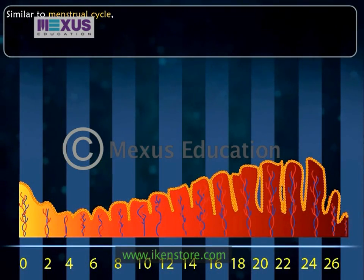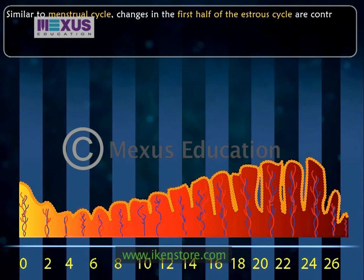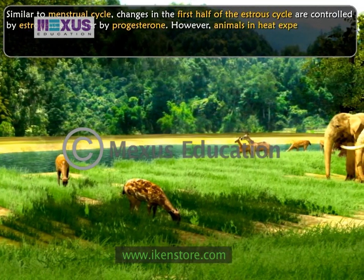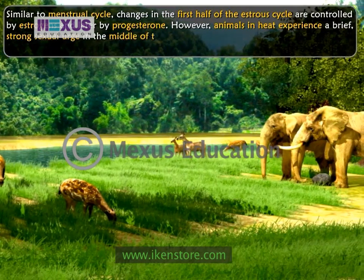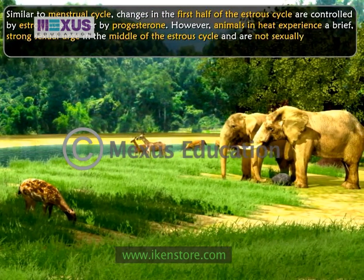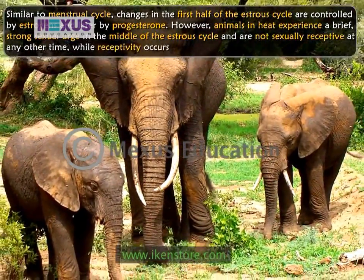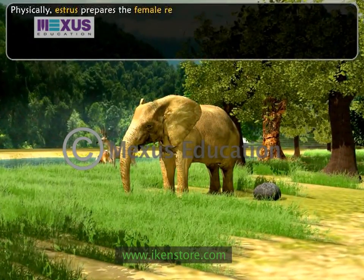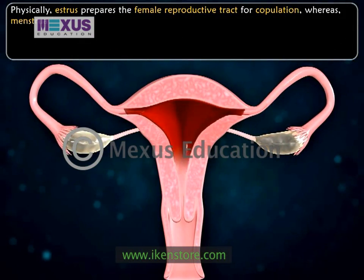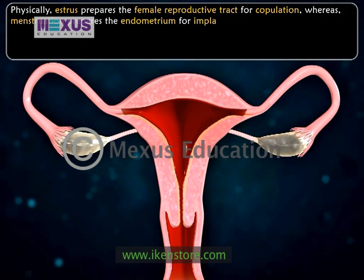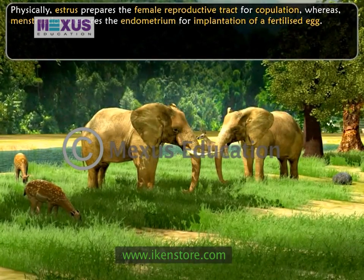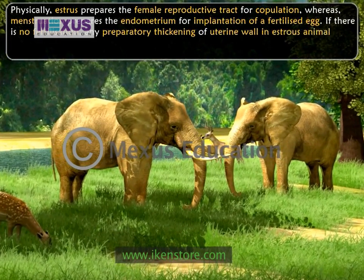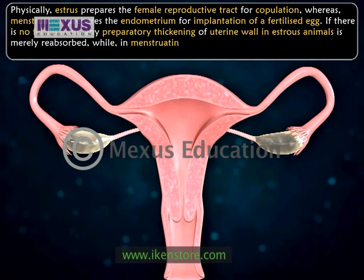Similar to the menstrual cycle, changes in the first half of the estrus cycle are controlled by estrogens and later by progesterone. However, animals in heat experience a brief, strong sexual urge in the middle of the estrus cycle and are not sexually receptive at any other time, while receptivity occurs throughout the menstrual cycle. Physically, estrus prepares the female reproductive tract for copulation, whereas menstruation prepares the endometrium for implantation of a fertilized egg. If there is no fertilization, any preparatory thickening of uterine wall in estrus animals is nearly reabsorbed, while in menstruating animals, the hypertrophic lining sloughs off as menstrual flow.